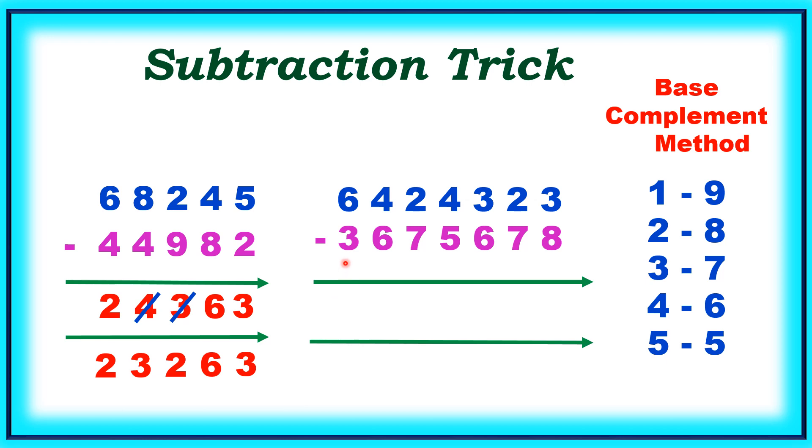6 minus 3 is 3. Here the next number is bigger than this one, so reduce one. It will become 2. 4 minus 6 is not possible. Hence 6 complement is 4. 4 plus 4 is 8. I am writing 7.